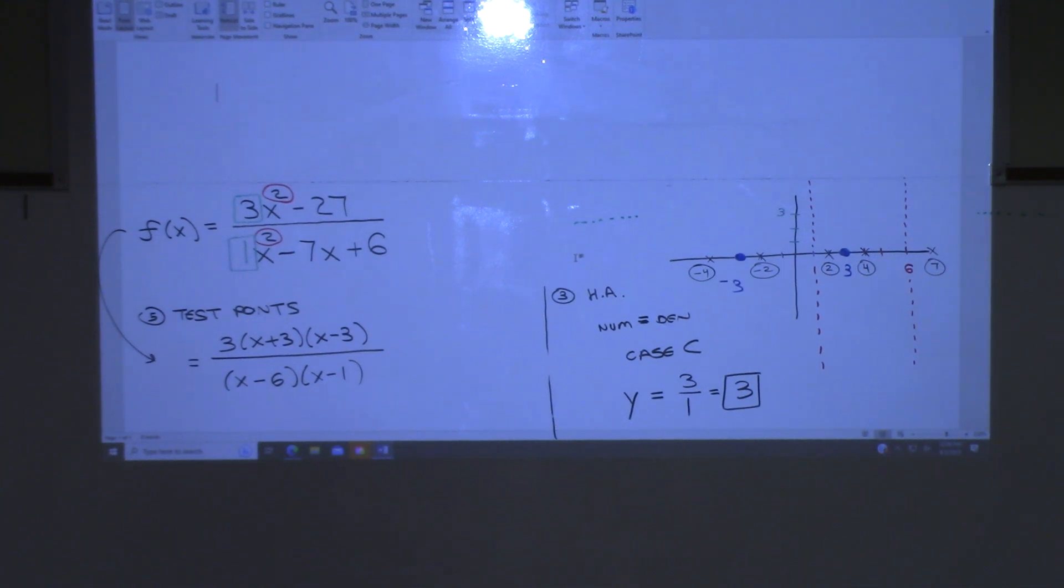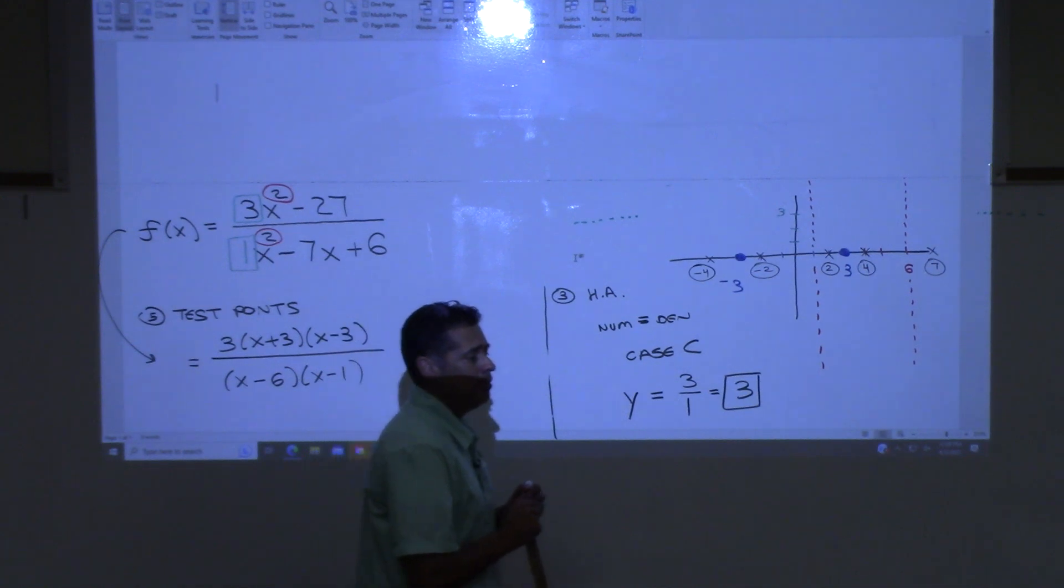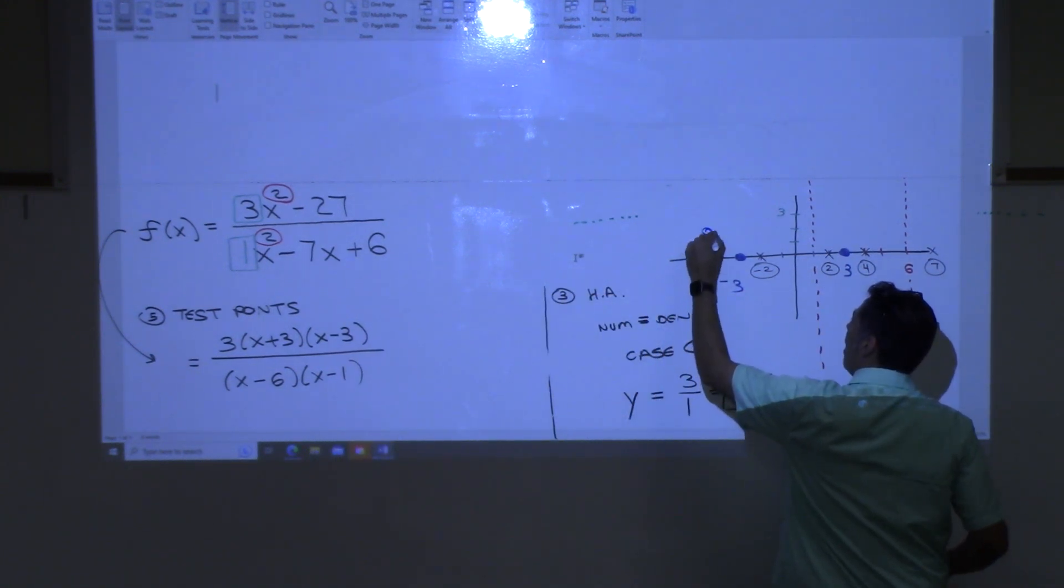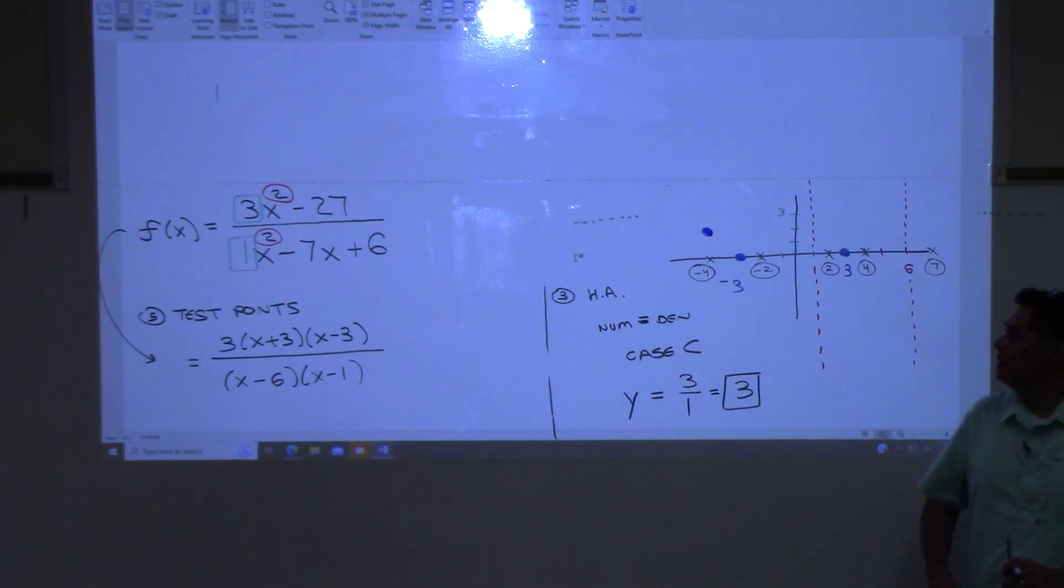All right, now I'm going to save us some time, and I'm not going to plug all five of those points in. I'm just going to tell you what you get as an answer. So when you plug in negative four, you're going to get a positive number. So you're going to put a dot above. How high up is up to you. I'm going to put it there. I did. Yes, I did. Yeah, I remembered to do it. Let me just double check. Yes.